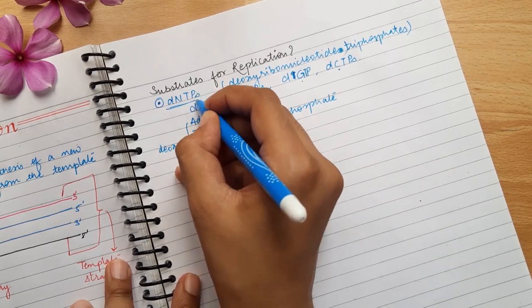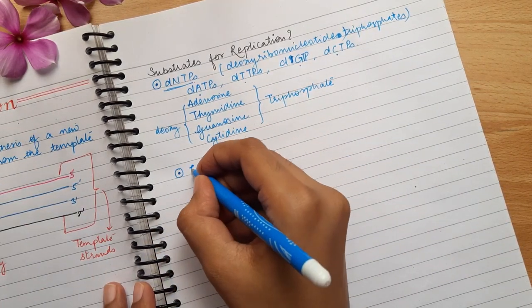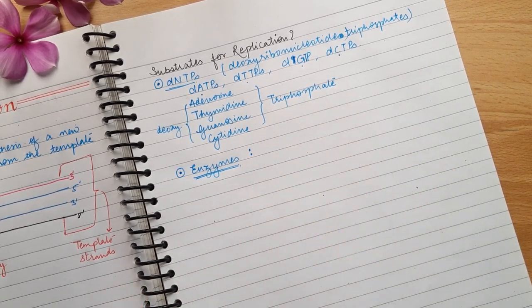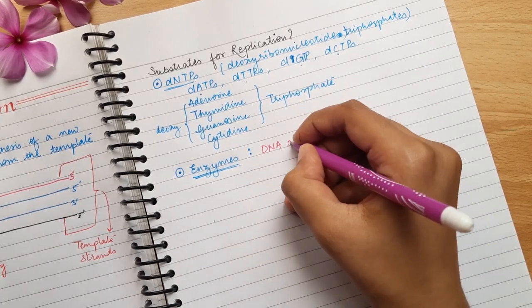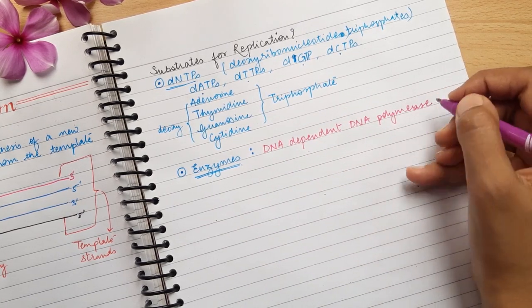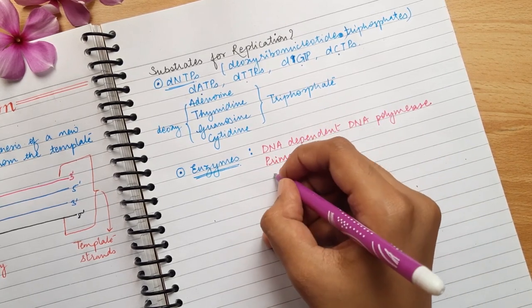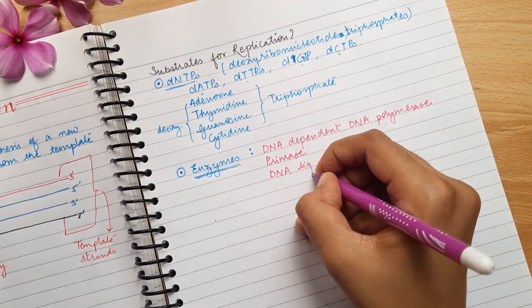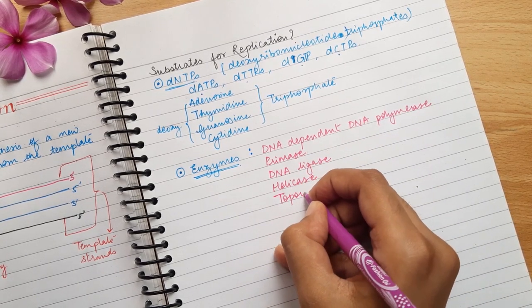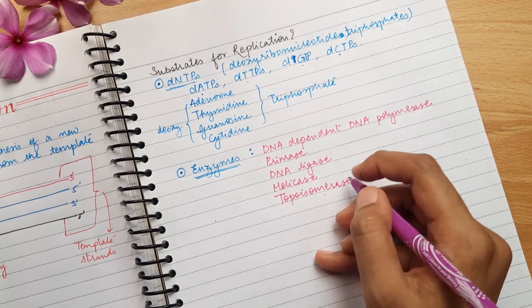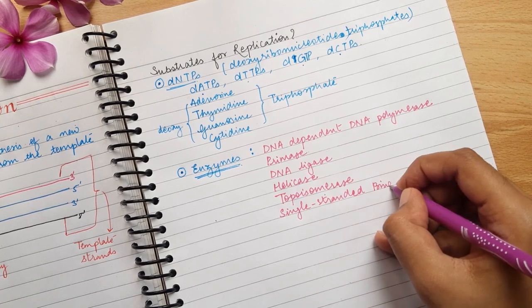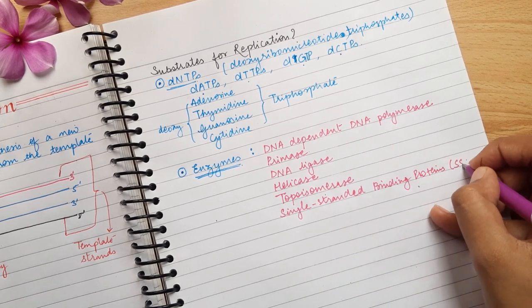So the first substrate is DNTPs. Now coming to the next substrate which are enzymes. Now a number of enzymes are involved in replication. The first one is DNA dependent DNA polymerase or simply DNA polymerase enzyme. Then there's primase, DNA ligase, helicase, then topoisomerase, and lastly single-stranded binding proteins which are also known as SSBPs.